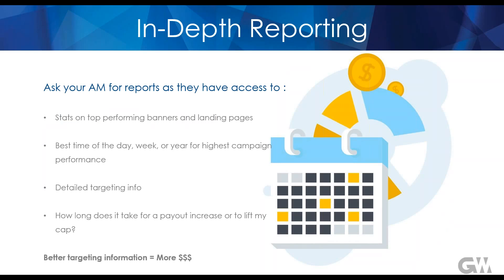Ask your affiliate manager for reports on what landing page, banner creative, country, or even city is performing the best, and also what time of day, week, or year converts the highest for a certain campaign. They can also pass along detailed targeting information based on carrier, device, age, gender, and income, and outline the target audience the advertiser is looking for. Ask your AM how long it will take for the advertiser to assess your quality in order to increase your cap or what volume or KPI is needed to get an increased custom rate.